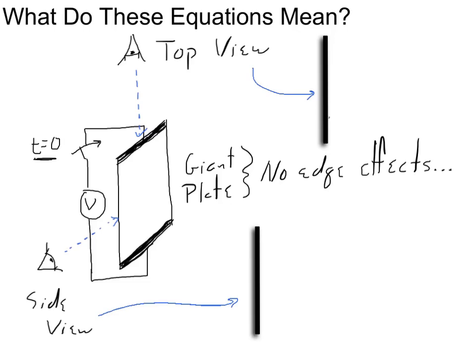We're going to have plenty of time to become acquainted with Maxwell's equations in a more mathematical form, but I want to spend time in this lecture talking about what these equations mean, because the meaning is actually kind of difficult if you just start from a mathematical perspective. So I want to give a more qualitative perspective. What we're going to do is set up a thought experiment — we have some kind of voltage source, and we're going to have a switch in our circuit, which we're going to close at time T equals zero.